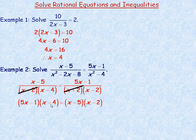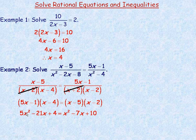Now I'll expand both sides. 5x minus 1 times x minus 4: 5x times x is 5x squared; 5x times negative 4 is negative 20x; negative 1 times x is negative x, giving negative 21x combined; and negative 1 times negative 4 is 4. On the right, x minus 2 times x minus 5: x squared, then negative 2x and negative 5x give negative 7x, and negative 5 times negative 2 is positive 10.